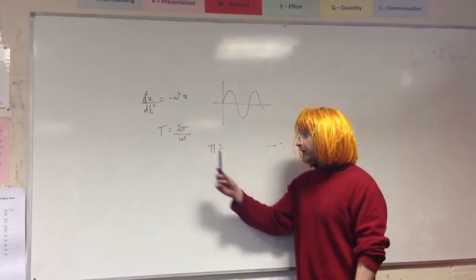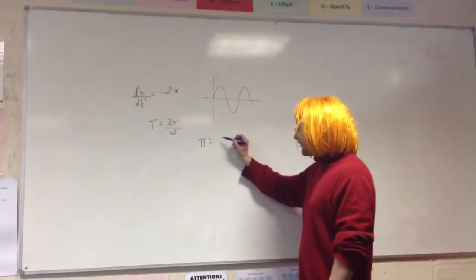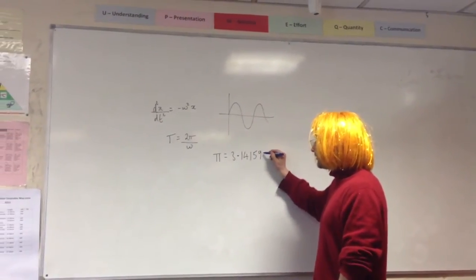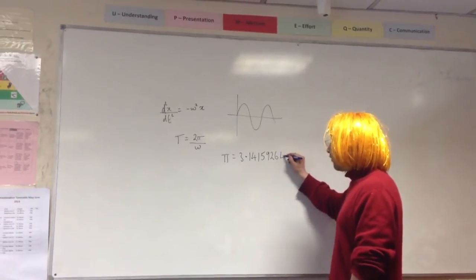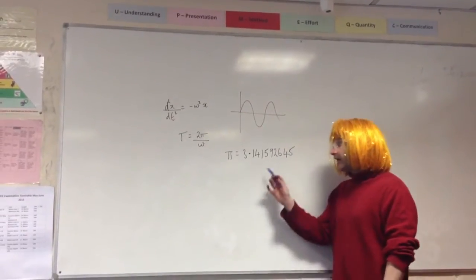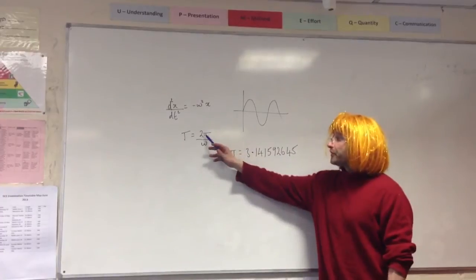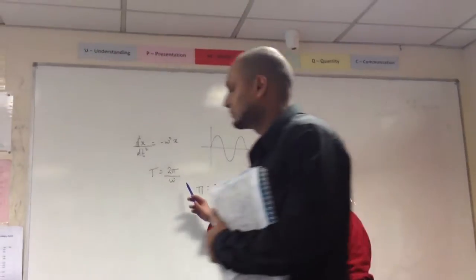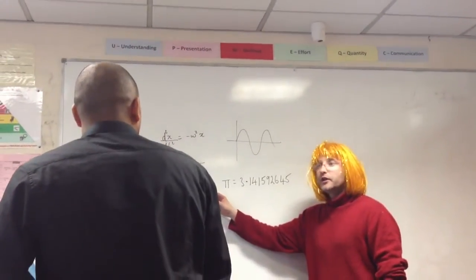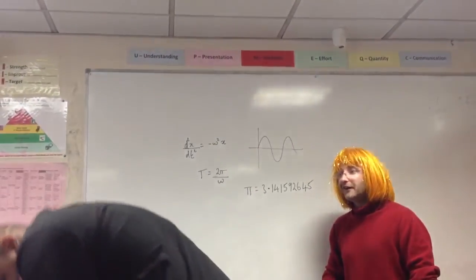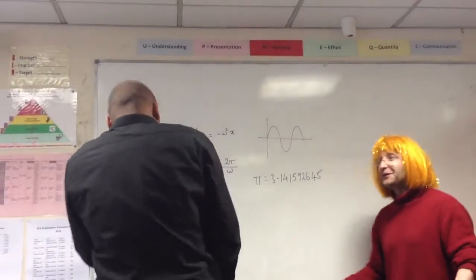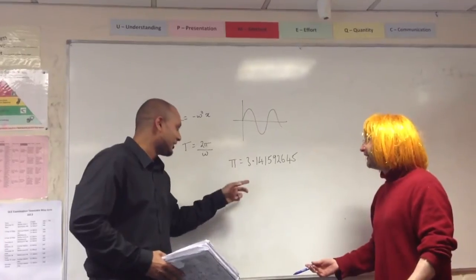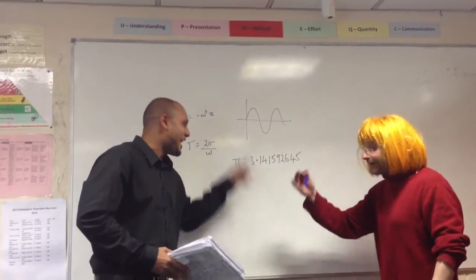Now, clearly if we use the value of pi — which, as you know, is 3.141592645 — and substitute that into this equation to find out what the time period is... it's 3.141592654.